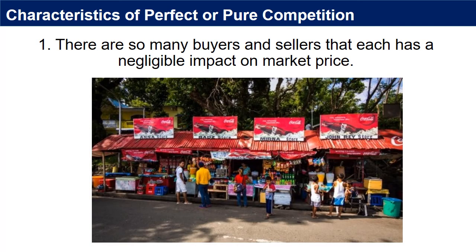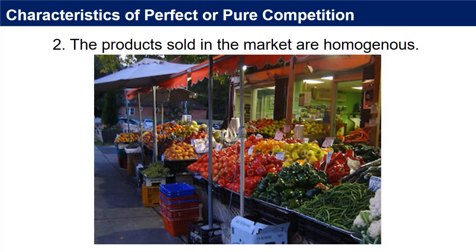Characteristics of perfect or pure competition. 1. There are so many buyers and sellers that each has a negligible impact on market price. The change in output of a single firm will not noticeably affect market price. Likewise, no single buyer can influence the price since consumers purchase only a small amount. 2. The products sold in the market are homogenous — highly similar such that consumers have no preference to buy from one seller over another. The goods offered for sale are all the same. For example, the salt from one store is the same salt that another store sells.